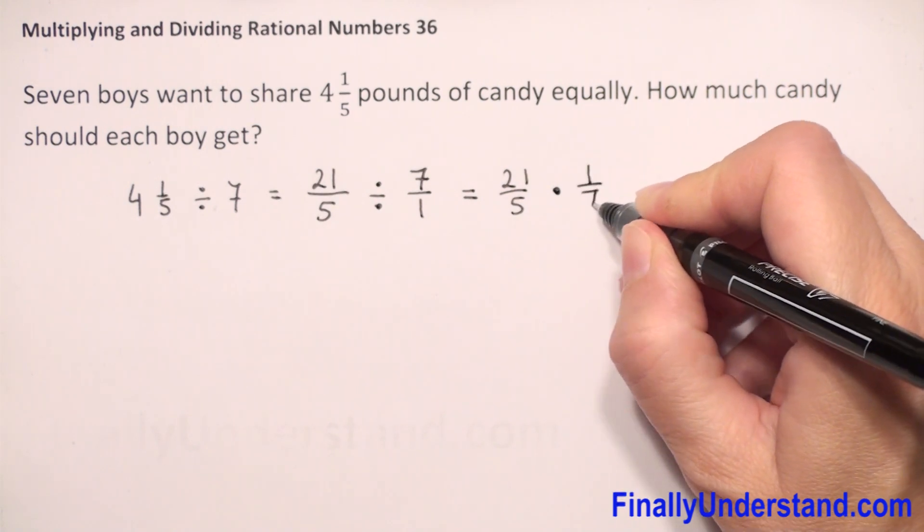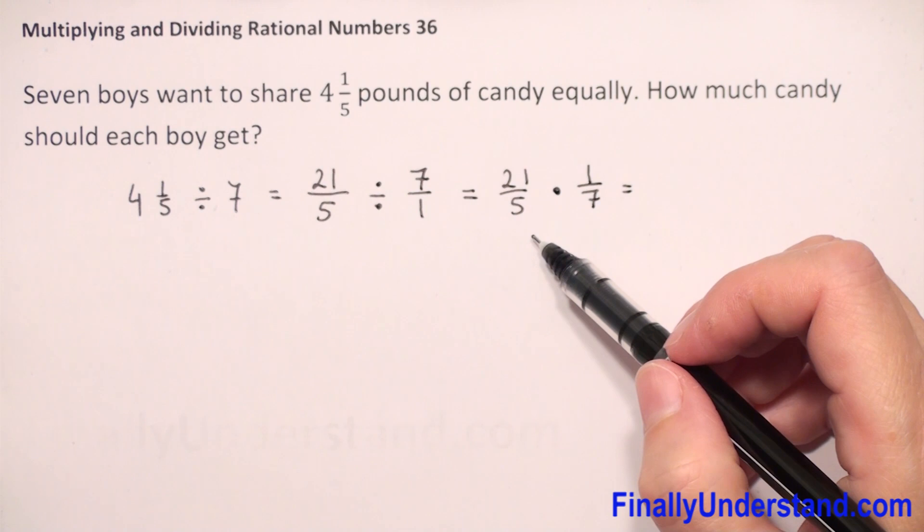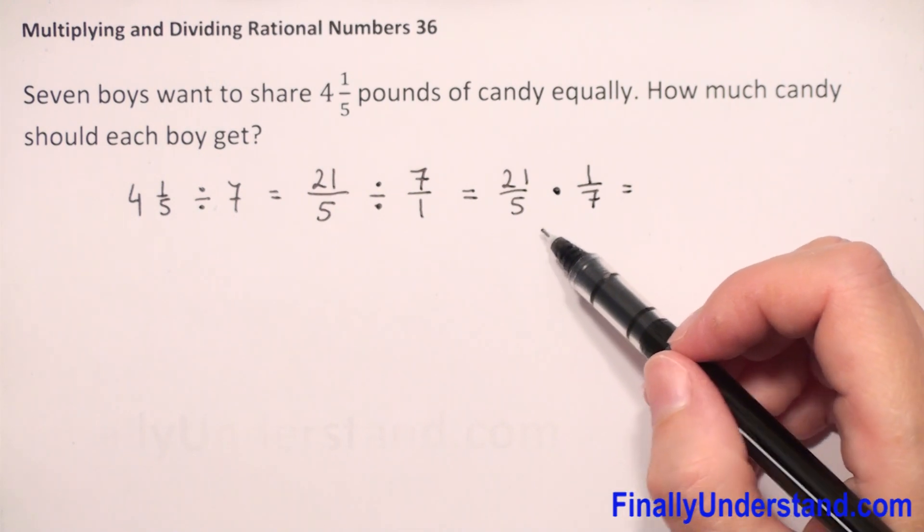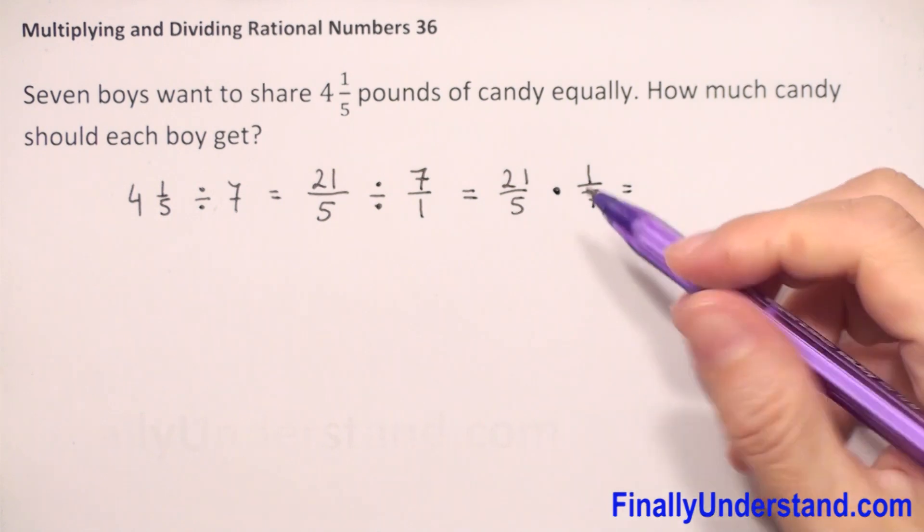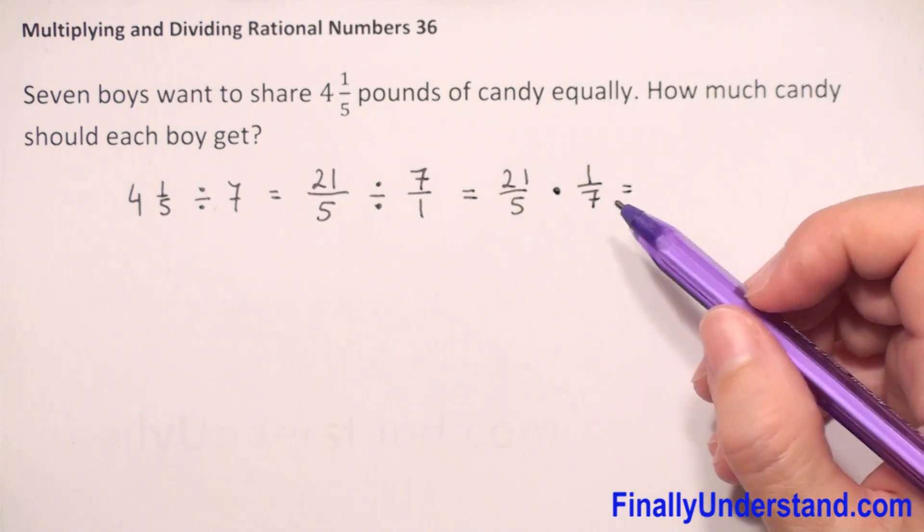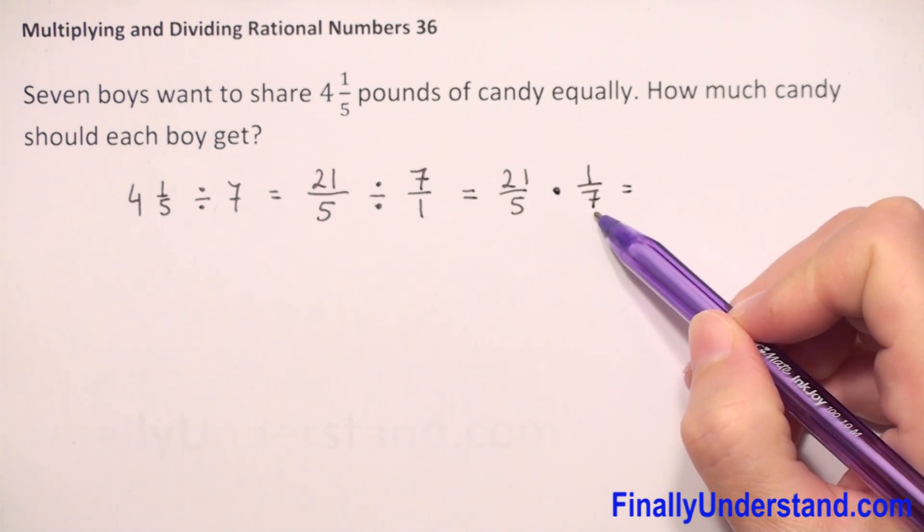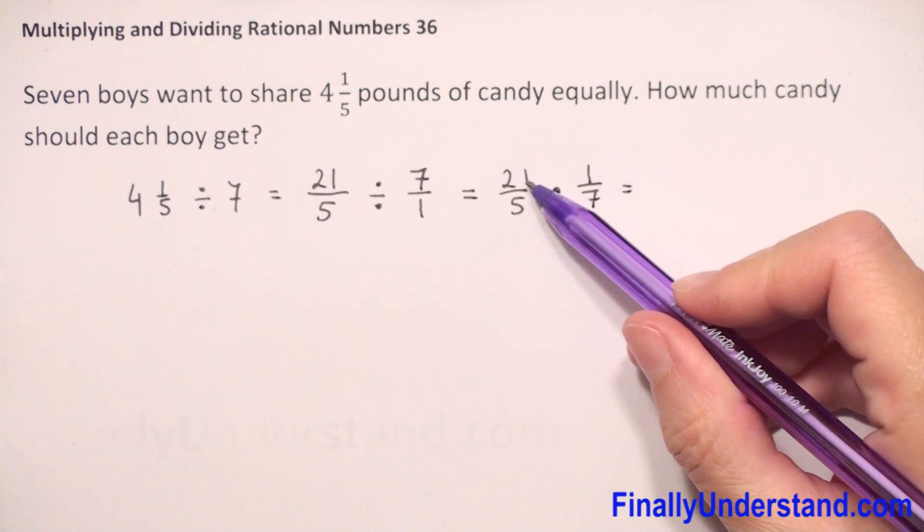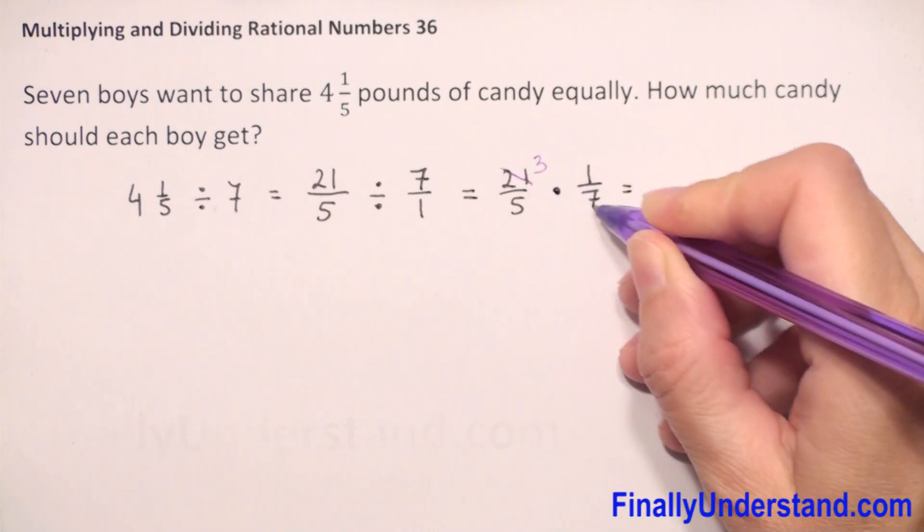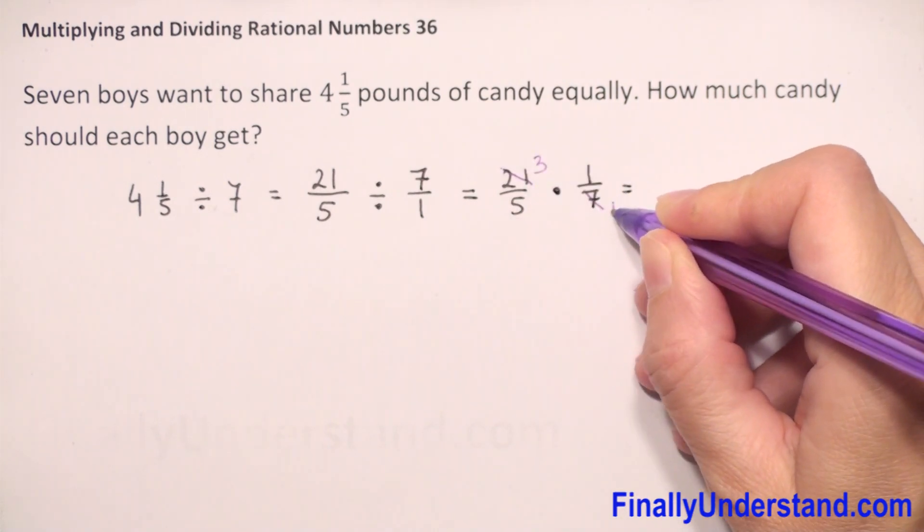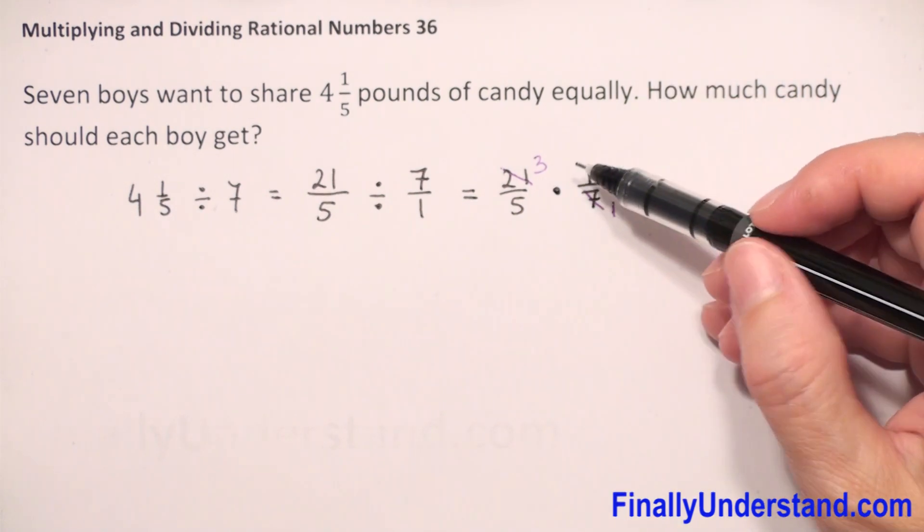Now before we multiply, we should always check if we can reduce. When we reduce, we divide a numerator and denominator by the same number. We have 21 in the numerator and 7 in the denominator. We can divide both by 7: 21 divided by 7 gives us 3, and 7 divided by 7 gives us 1. Now it's easy to multiply.